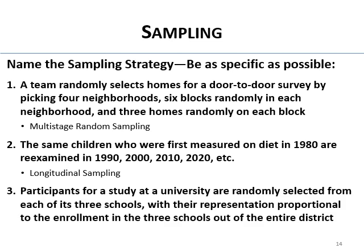Participants for a study at a university are randomly selected from each of its three schools with representation proportional to enrollment across the district. There are strata where they're trying to get representativeness, and it's done randomly — that's stratified random sampling.